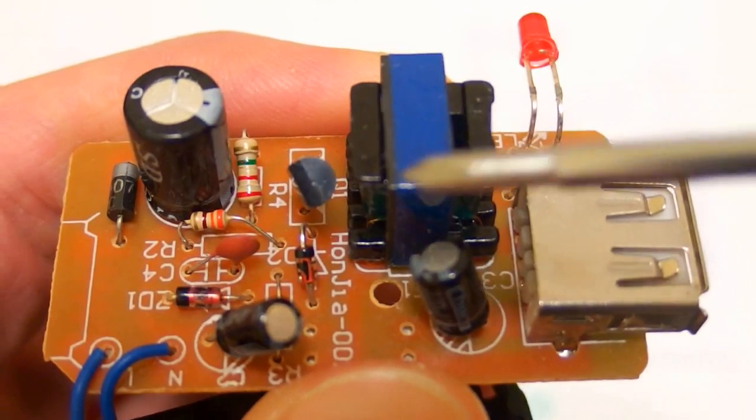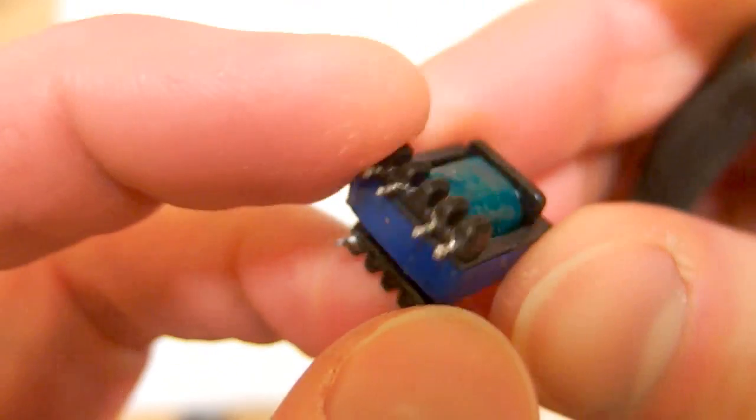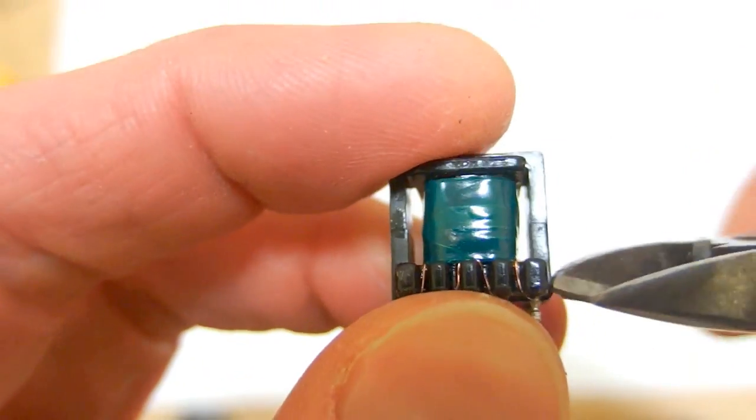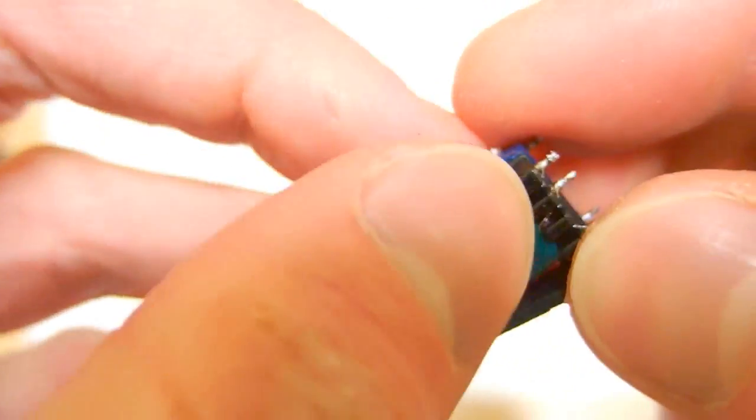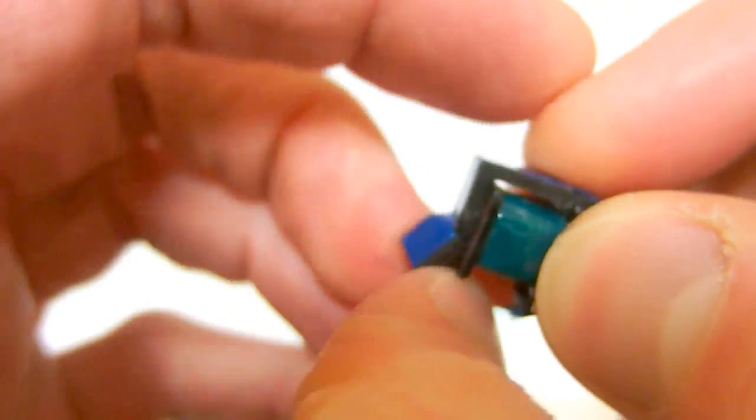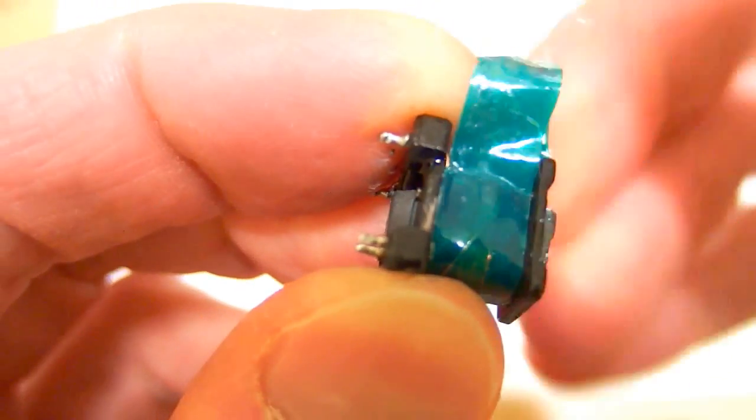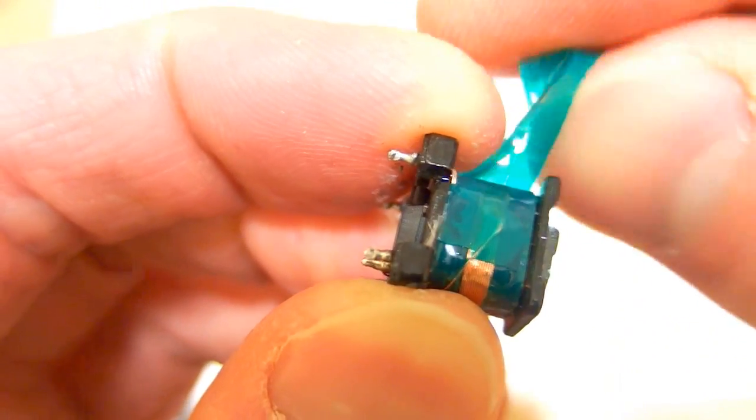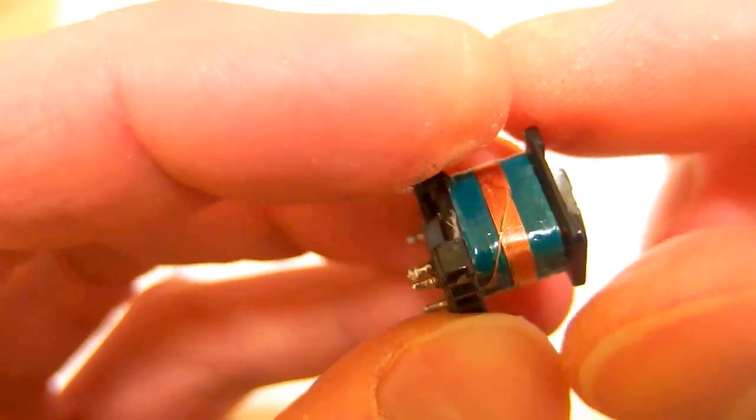So the isolation mostly depends on this transformer. I have removed it from the board and let's open it up and see what's inside and how much it is isolated. One layer, two layers from the outside. And this is probably the auxiliary winding.